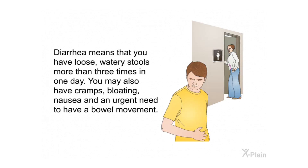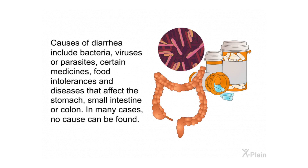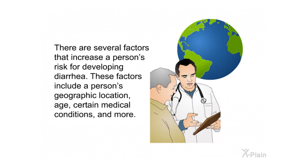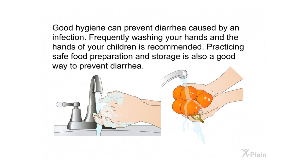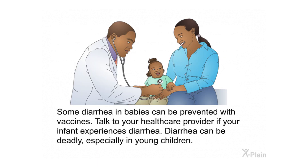Summary: Diarrhea means that you have loose, watery stools more than three times in one day. You may also have cramps, bloating, nausea, and an urgent need to have a bowel movement. Causes of diarrhea include bacteria, viruses, or parasites; certain medicines; food intolerances; and diseases that affect the stomach, small intestine, or colon. In many cases, no cause can be found. Good hygiene can prevent diarrhea caused by infection. Frequently washing your hands and the hands of your children is recommended, as is practicing safe food preparation and storage. Some diarrhea in babies can be prevented with vaccines.